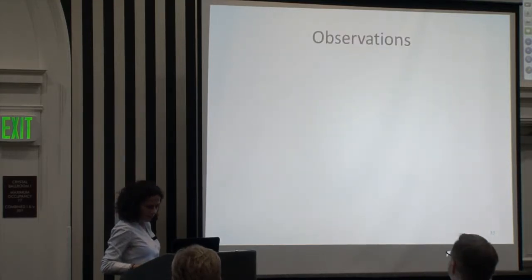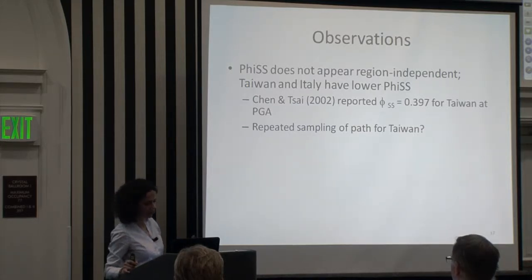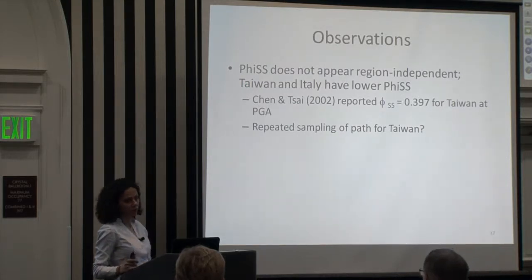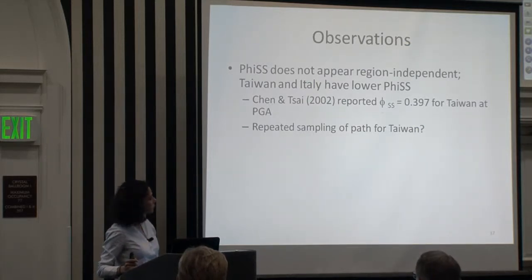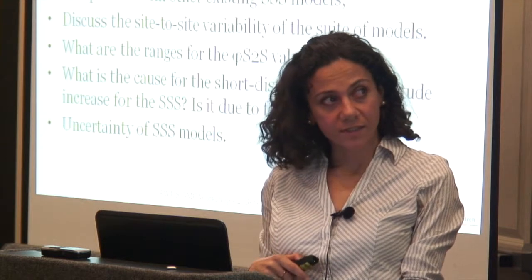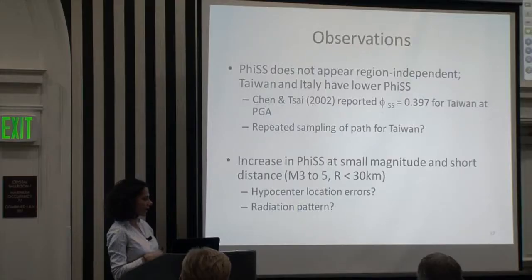Observations: phi SS from this analysis does not necessarily appear to be region-independent. Taiwan clearly had lower phi SS with enough data, and another study — Chen and Tsai 2002 — also reported low phi SS for Taiwan. There is clearly something going on there. I also looked at the effects of path on phi SS. The other observation is an increase in phi SS at small magnitude and short distance. We want to understand why — is it high location errors? Is it radiation pattern? This is work in progress.